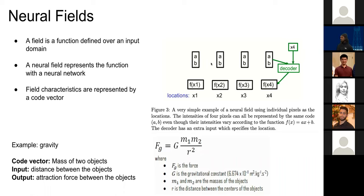In this picture we have a code vector a, b — we put that into the decoder along with a position x4 and get back the function value f(x4), where f is the field function. As a familiar example, gravity is a field: the code vector would be the masses of two objects, the input would be the distance between them, and the output would be the attraction force.